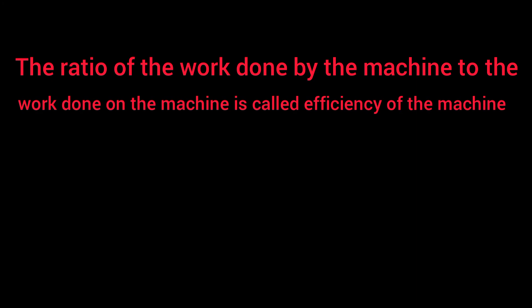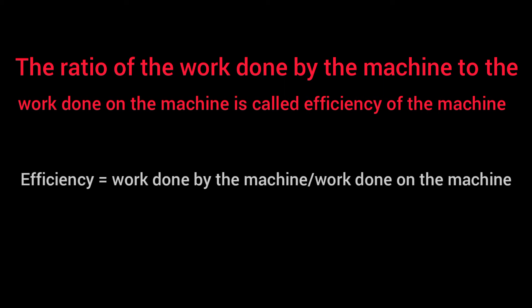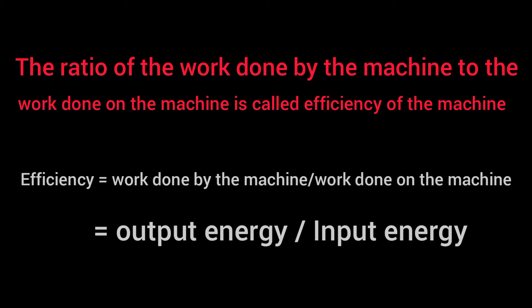The next term we are going to learn is efficiency. The ratio of the work done by the machine to the work done on the machine is called the efficiency of the machine. It can be written as work done by the machine divided by work done on the machine. Work done by the machine is the output energy, and work done on the machine is the input energy. So we can write: efficiency is equal to output energy divided by input energy.